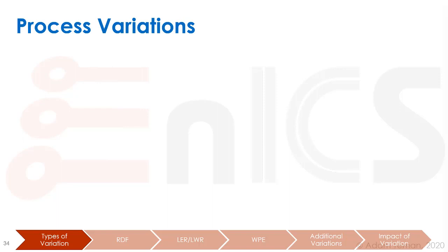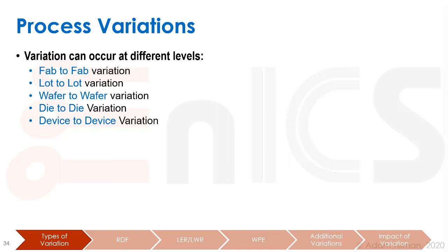There are many different levels at which we differentiate between process variations. We'll start with a general, large-scale type of variation, and we can differentiate between what we call fab-to-fab variation, lot-to-lot, wafer-to-wafer, die-to-die, device-to-device, and there may be different subcategories.